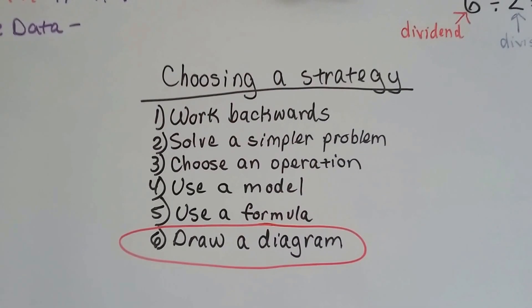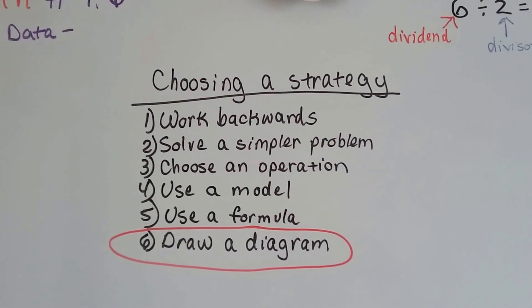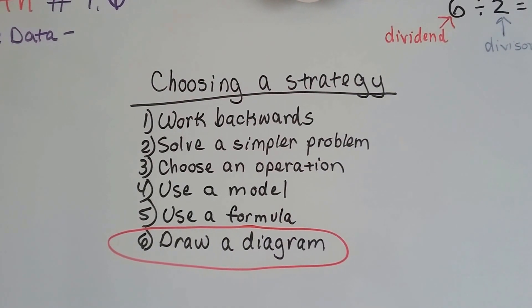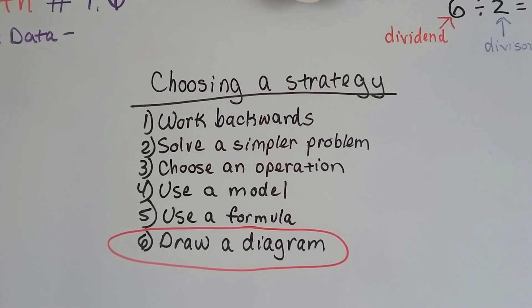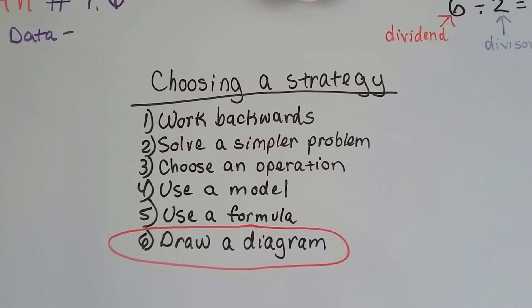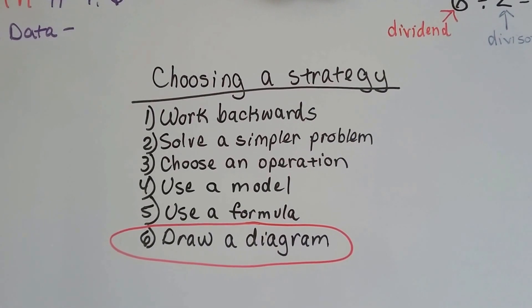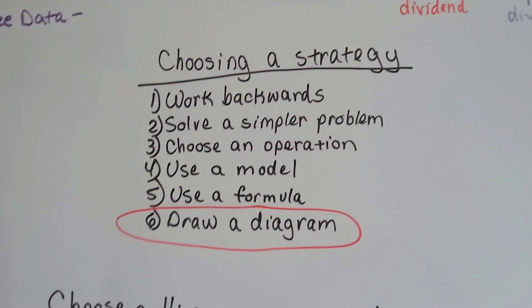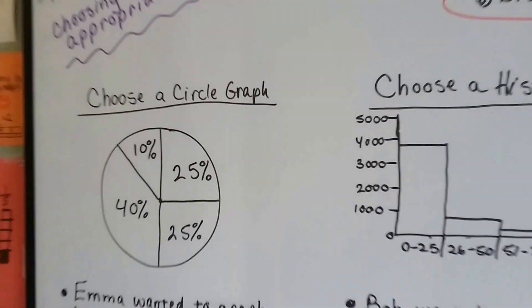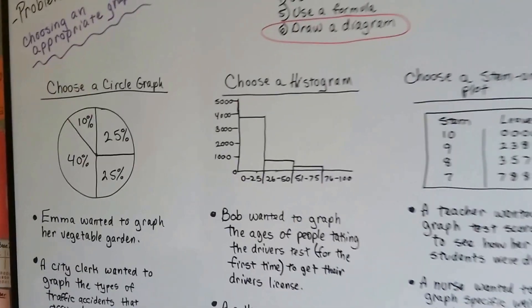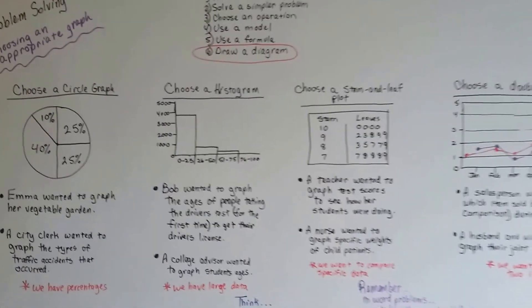When we do word problems we need to choose a strategy. We need to either work backwards, solve a simpler problem, choose an operation or a model, use a formula, or draw a diagram. And graphs are diagrams.